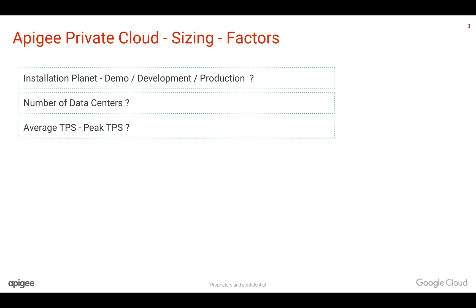The next factor is Average TPS and Peak TPS. As you know, Apigee can be scaled infinitely and horizontally. So you need to come up with what is the average TPS, what is the peak TPS, and how many hours of activity will there be for the APIs.